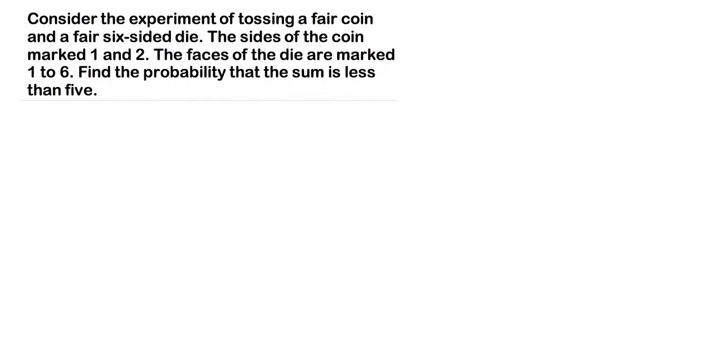Consider the experiment of tossing a coin and a fair six-sided die. The sides of the coin are marked one and two and the faces of the die are marked one to six. Find the probability that the sum is less than five.